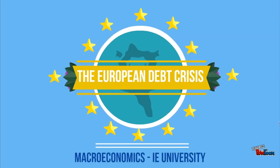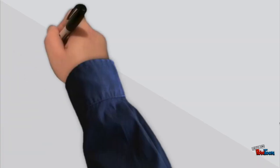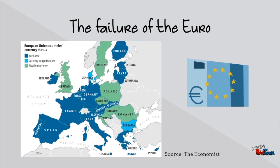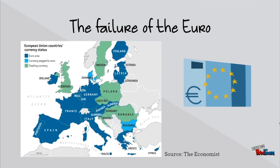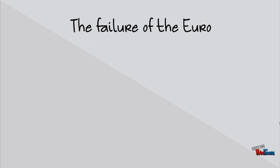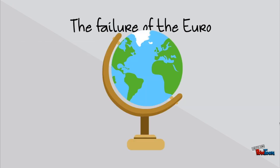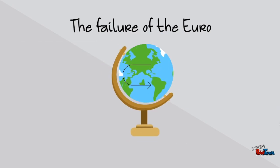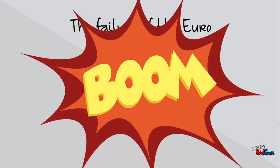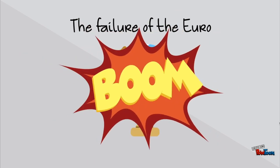What is the European Debt Crisis? The failure of the Euro, the currency that ties together 19 out of 28 European states. In an interconnected economy, the downfall of a country can trigger the collapse of an entire continent and even of the whole world.